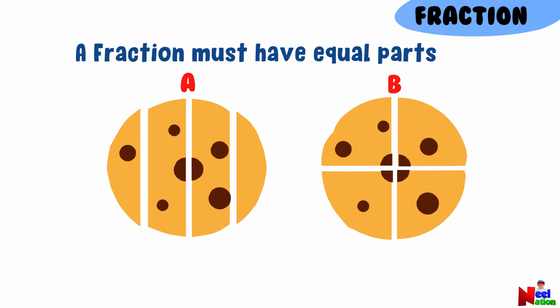Cookie B. You are right. Cookie B has been split into four equal parts, so everyone gets an equal share. Whereas cookie A is split into four unequal parts. This way is not fair.